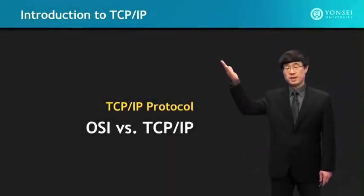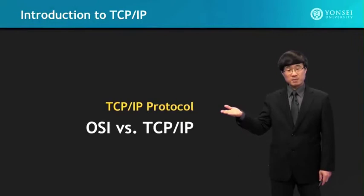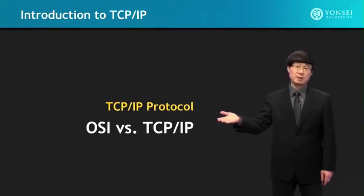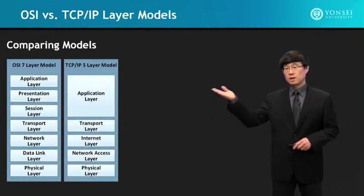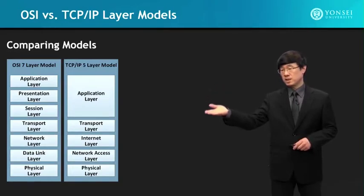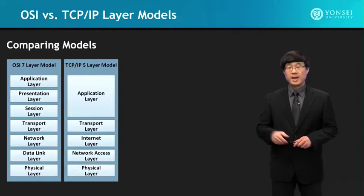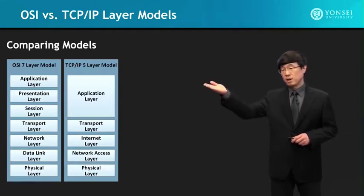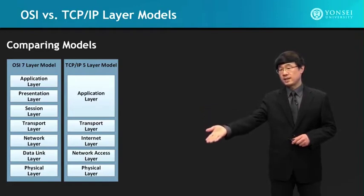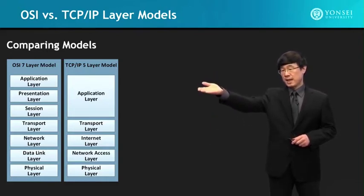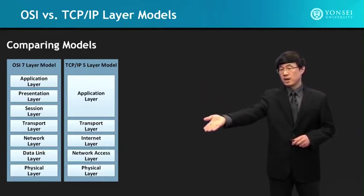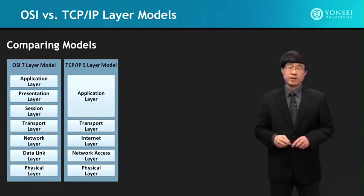For the course Introduction to TCP/IP, this course is about the TCP/IP protocol. First, we'll study about the OSI and the TCP/IP models. Comparing the OSI 7-layer model and the TCP/IP 5-layer model: the OSI 7-layer model has the application layer, presentation layer, session layer, transport layer, network layer, data link layer, and the physical layer. The TCP/IP 5-layer model has the application layer, transport layer, internet layer, network access layer, and the physical layer.